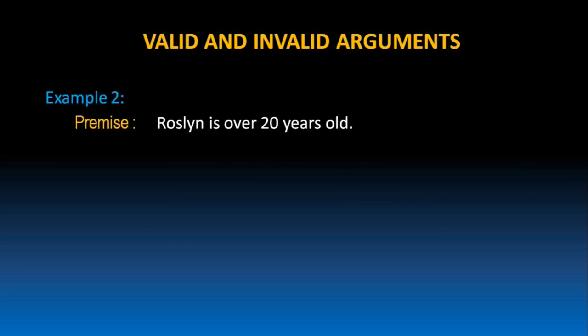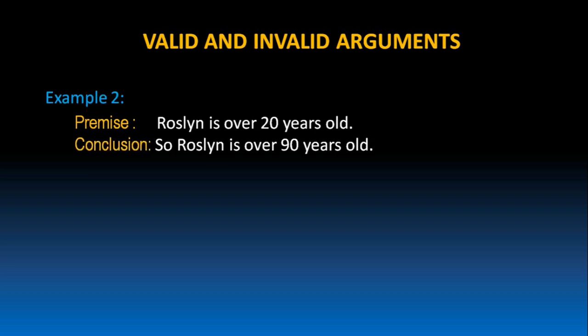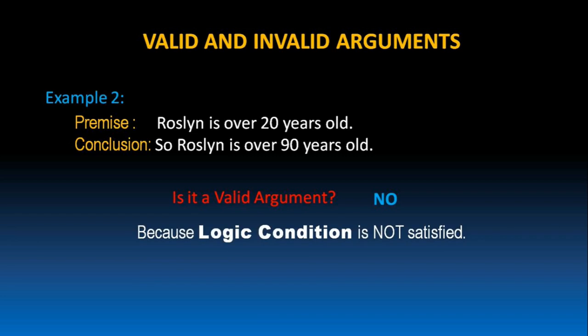Let us take one more example. Rosaline is over 20 years old. So Rosaline is over 90 years old. Is it a valid argument? No, it is not a valid argument because the logic condition is not satisfied. The conclusion cannot be inferred from the given premise. The premise says Rosaline is over 20 years old, but from this we cannot infer that Rosaline is over 90 years old. When the logic condition is not satisfied, that argument is treated as an invalid argument.